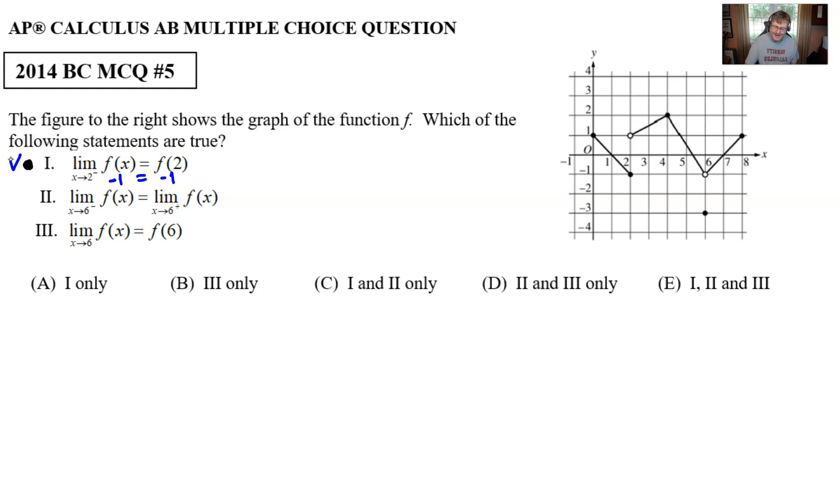Therefore, any answer choice that does not say that Roman numeral I is in the answer needs to be eliminated immediately. Even if this is all you know about this question, you can eliminate two choices and make your guessing probability even better. But hopefully we can persist with the other choices and see truth or falsehood in each of them as well.